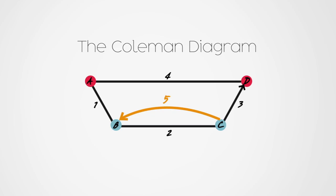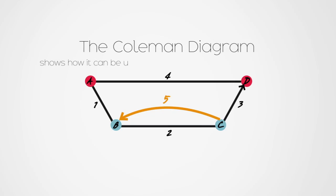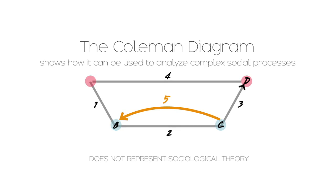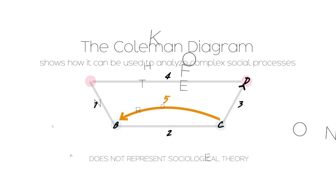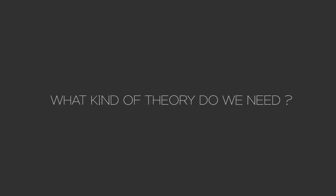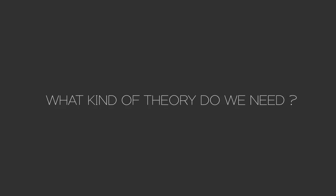This video has shown how the Coleman Diagram can be used to analyze complex social processes. The diagram is not a summary of any particular sociological theory — it is a device for making it easier to see what kind of theories we need.